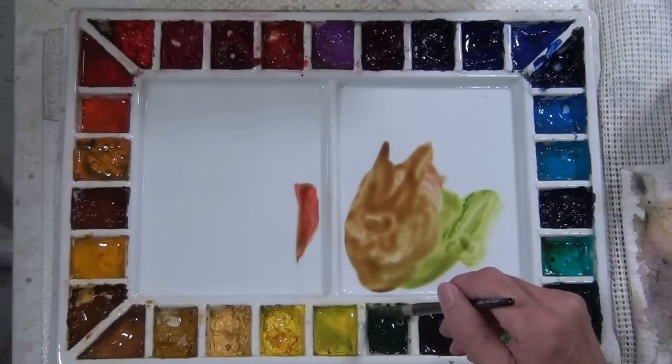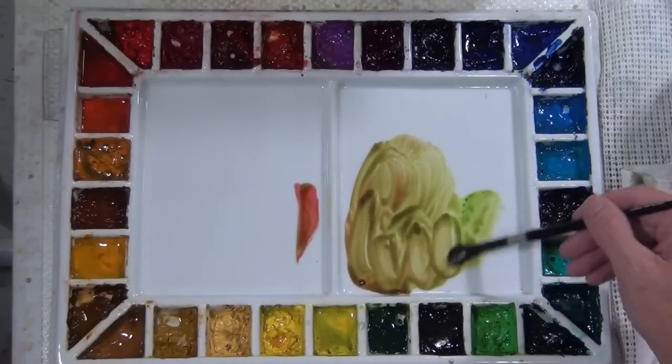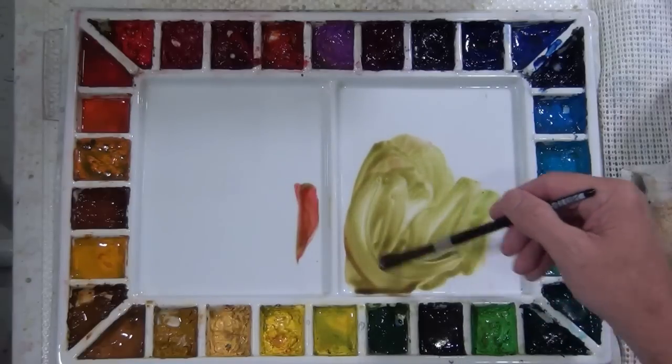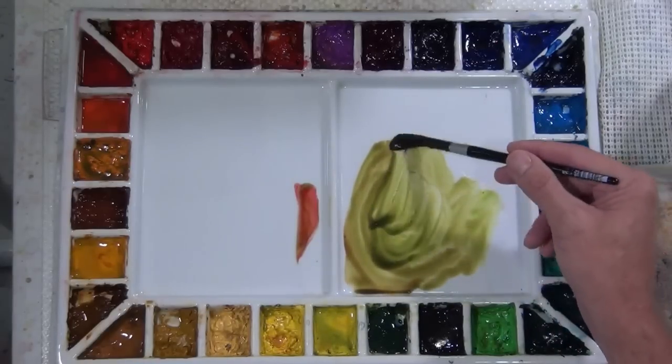But you can swing it back and forth by adding more green. I can take it back towards the green. If I add more red I can take it back towards the red. And you can do this until you get exactly the mixture that you are looking for.